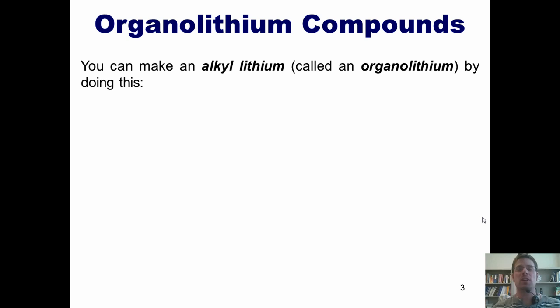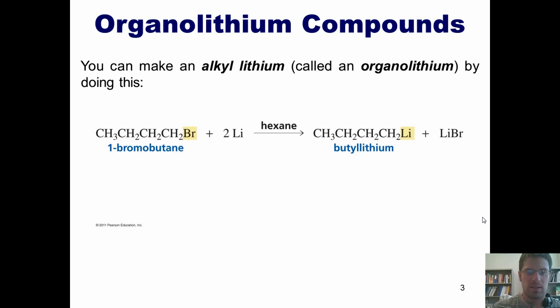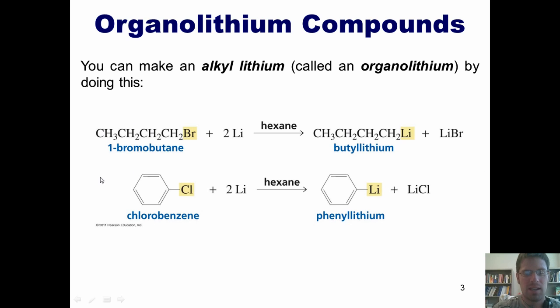I'll now begin by teaching you about organolithium compounds. You can make an organolithium compound, which is also called an organolithium, by doing this. First, you take an alkyl halide, such as this alkyl bromide, and react it with two equivalents of lithium metal. What it ends up doing is placing whatever alkyl chain, in this case a butyl chain, but this could be any other alkyl chain that's attached to your bromine, on the lithium. Another example of that is shown here. I take chlorobenzene, this molecule here, react it with two equivalents of lithium, and generate this molecule, phenyl lithium.